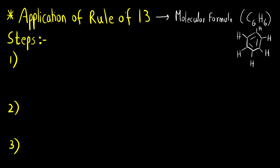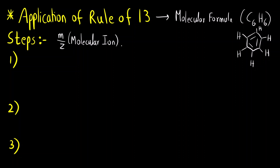For an unknown compound or sample, if I want to find out the molecular formula, I can find it from the m/z value — that is, the molecular ion peak should be given to us. Second, it should be given whether the compound has carbon and hydrogen. Apart from this, whether a molecule has oxygen or nitrogen — these hetero atoms are present or not — that information should also be given. If we have this much information then we can find out the molecular formula using the rule of 13.